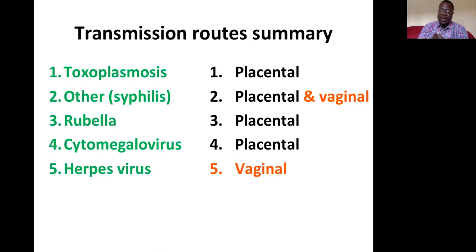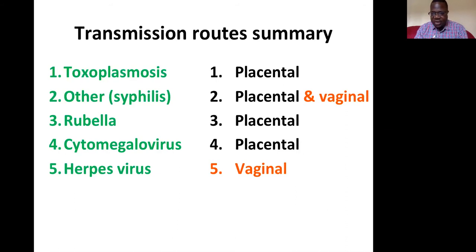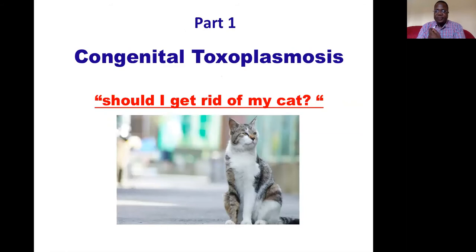Syphilis can also be transmitted intravaginally or perivaginally — when the child is passing through the vaginal canal during birth, that child can become infected. The same applies to herpes simplex virus, which the baby can also contract when passing through the vaginal canal during birth. This part of the lecture will mainly focus on congenital toxoplasmosis.